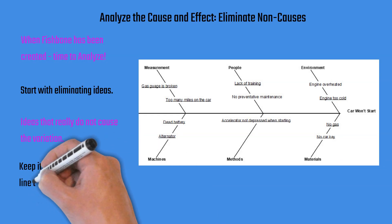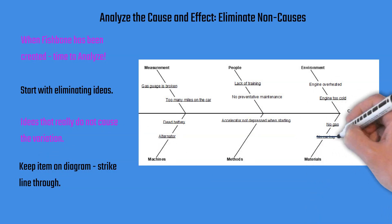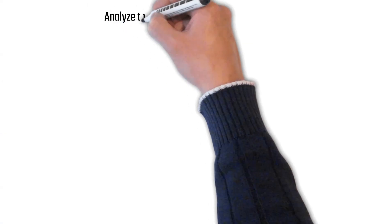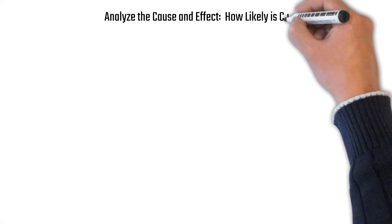Ideas that really do not cause the variation. You keep the item on the diagram, but you strike through it. For example, we have car keys. So we know no car keys is not the cause. We strike it out.